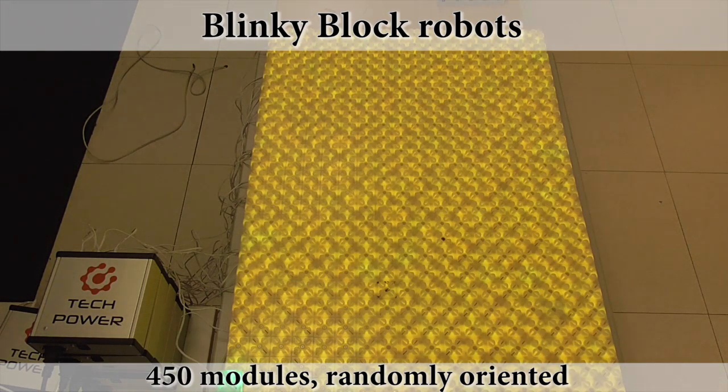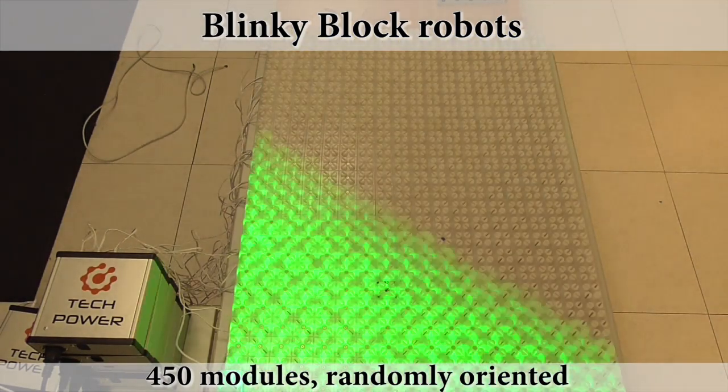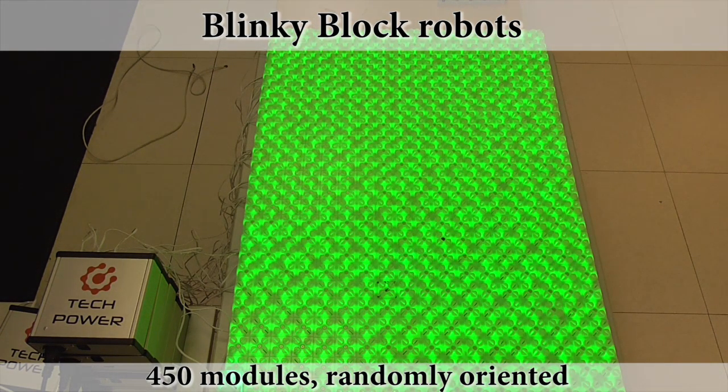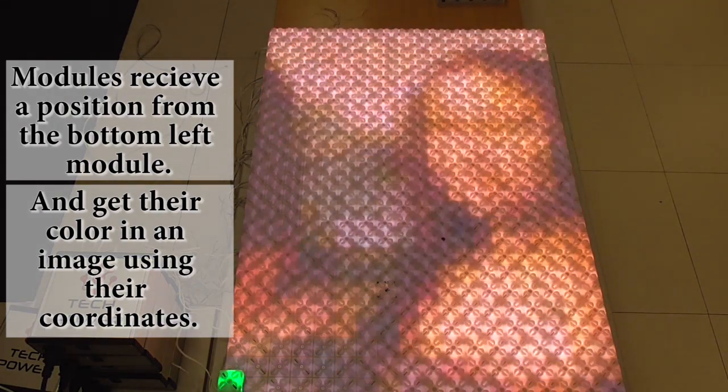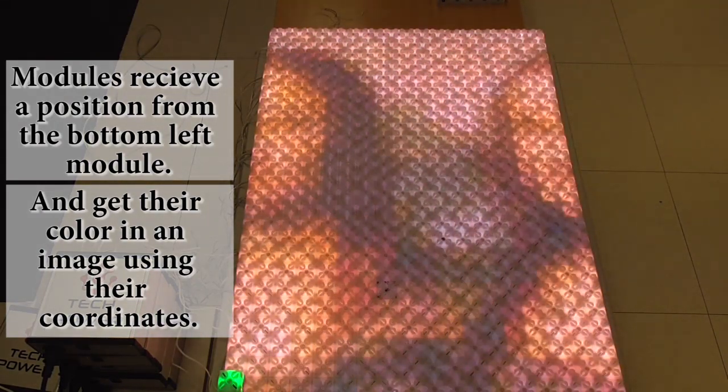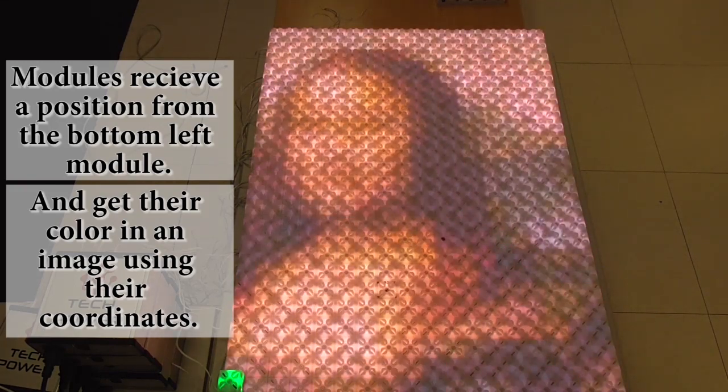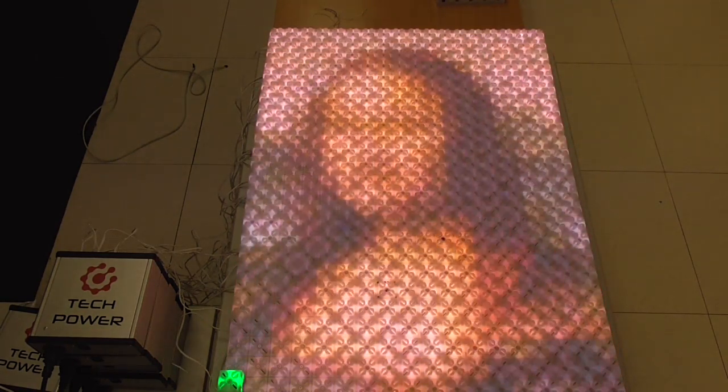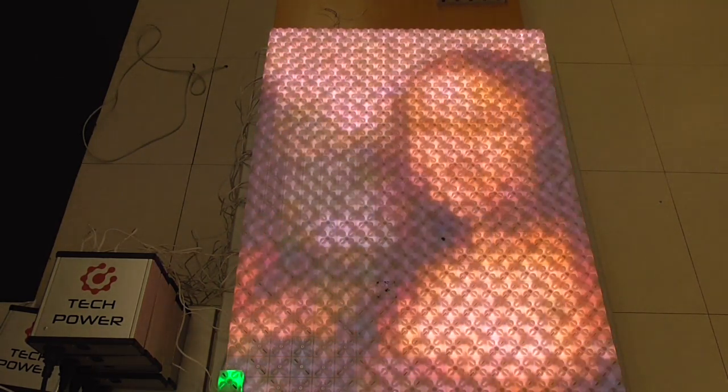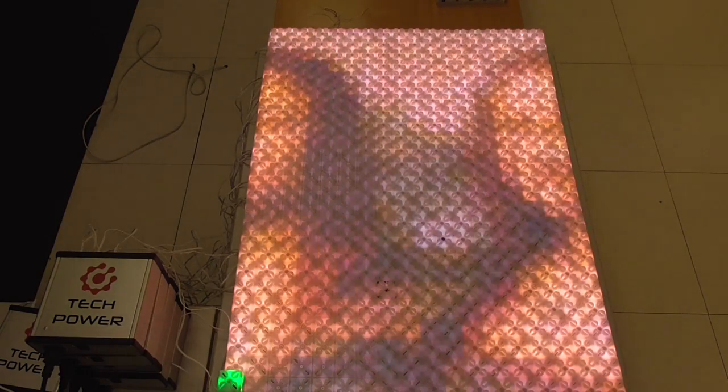This last experiment shows an application of the coordinate system on blinky blocks. After receiving their final position, robots set their color, picking it in a picture at the pixel corresponding to their position. Then, after a short time, they change to the color of the pixel placed at the right, creating a sliding effect.